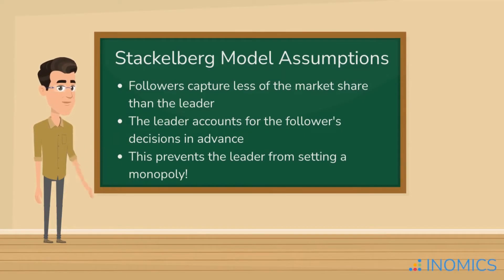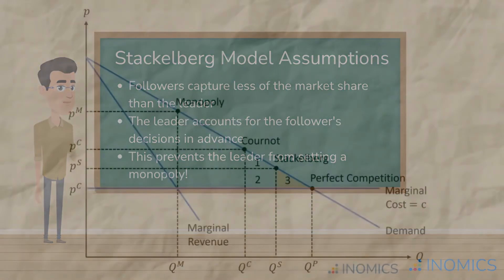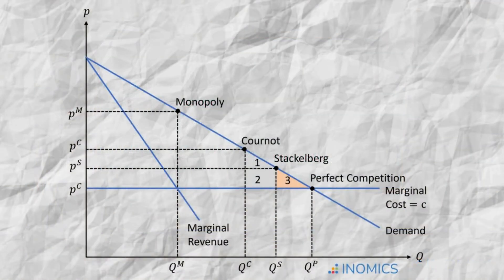Anticipating this behavior by the follower, the leader chooses a quantity smaller than the monopoly quantity, but still larger than what they would produce in the Cournot equilibrium. The follower, meanwhile, produces slightly less than they would in the Cournot equilibrium. The final outcome in Stackelberg competition is a market that is more competitive than in the Cournot situation, but still not perfectly competitive. Prices are higher than in perfect competition, but lower than in the Cournot equilibrium, and the quantity produced is higher than in the Cournot equilibrium, but lower than in perfect competition.